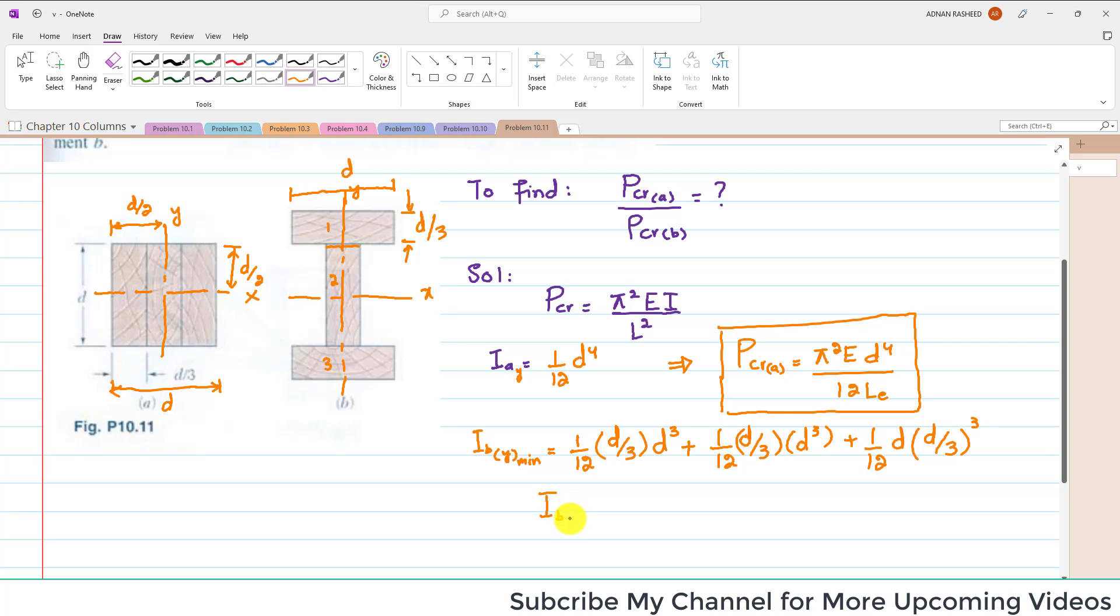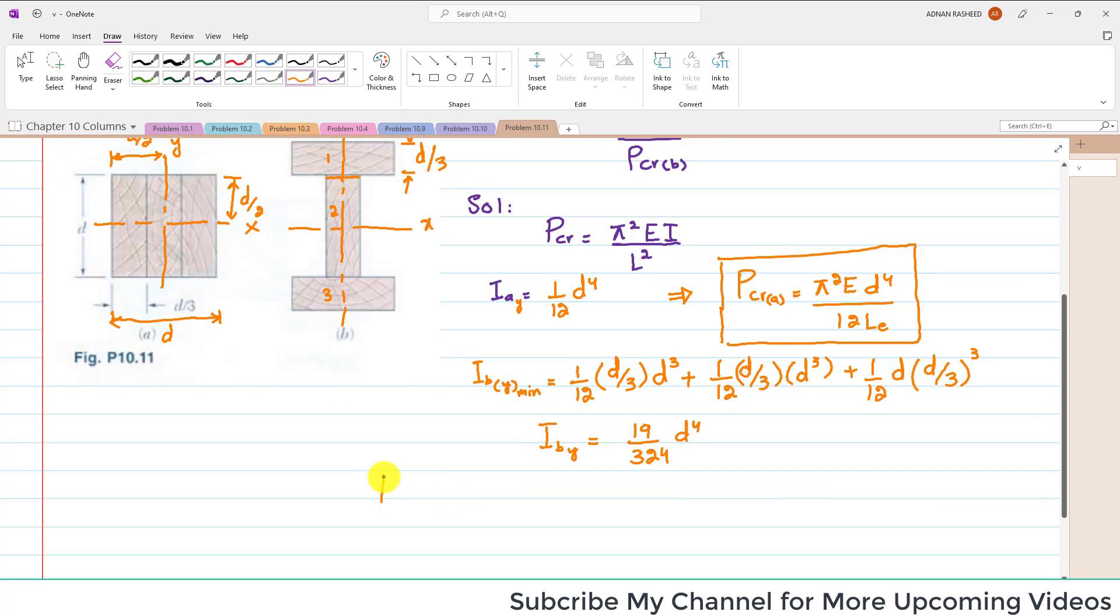When you calculate I_B about y-axis, it equals 19/324·D⁴. P_critical for this B portion is π²E times 19·D⁴ over 324·L², or rearranged: 19π²E·D⁴ over 324·L².